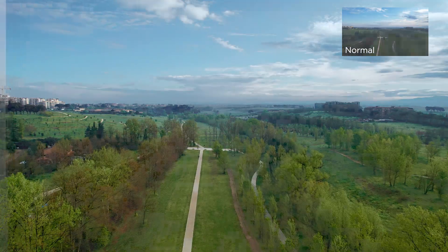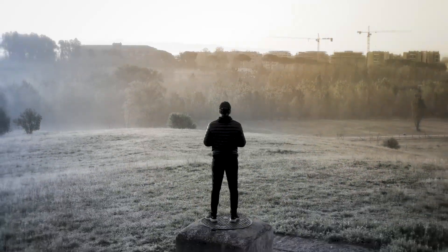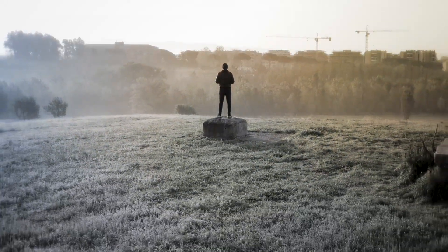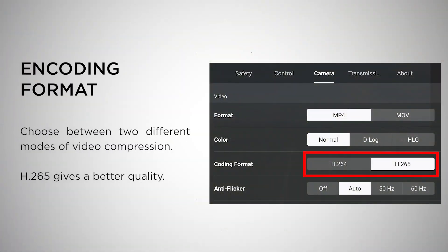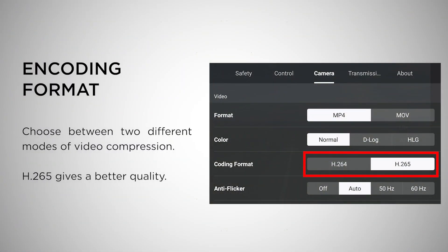We spoke about the H.264 and H.265 encoding formats — these are two different ways that the drone can compress video files. You don't need to understand video compression. Just use H.265 if you want better video quality. If you don't have a fast computer or if your editing software doesn't support H.265, use H.264.